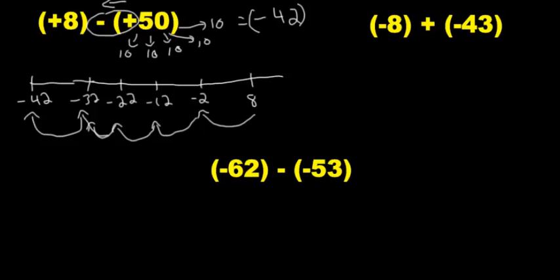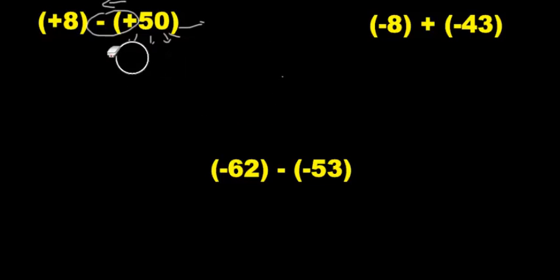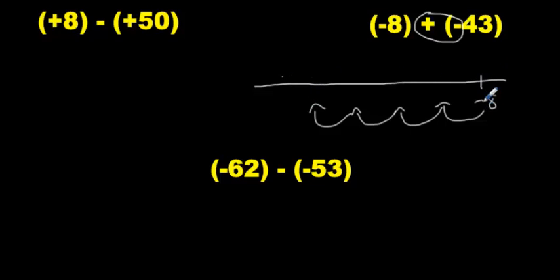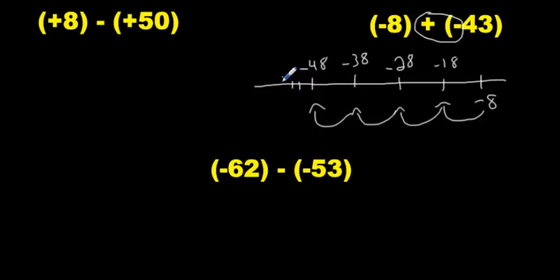Now this next one — if you need the previous one, pause the video and write it down. I'm going to start at negative 8, so let me make my own number line. I know I'm going to go to the left again, so I'm making lots of room on the left. I'm at negative 8 and I'm going 43 spaces. 43 is made up of four 10s and then three more. So I jump by 10: negative 18, negative 28, negative 38, negative 48. Then I count by ones for the last three: negative 49, negative 50, negative 51. That's my answer. Put it in brackets — don't forget the brackets.